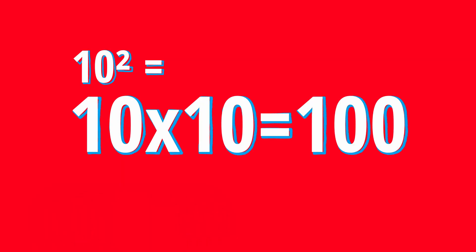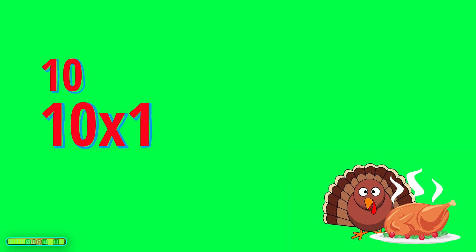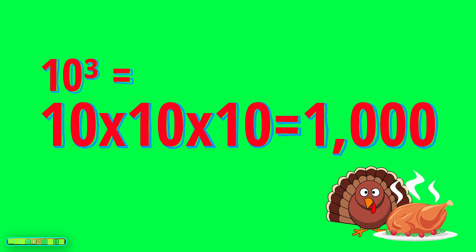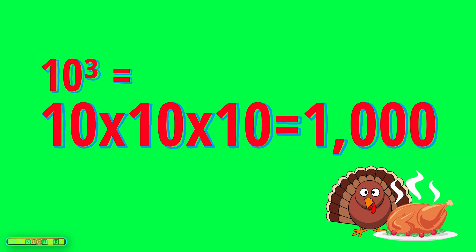10 squared means 10 times 10, which is 100. 10 cubed means 10 times 10 times 10, which is 1,000.